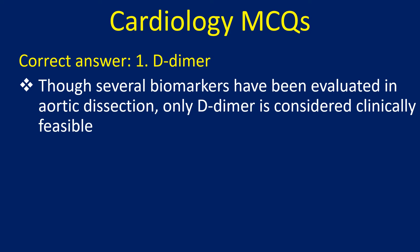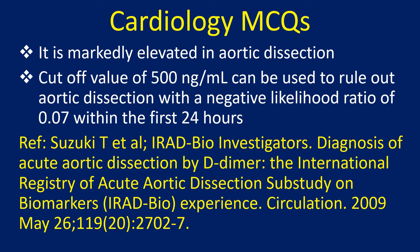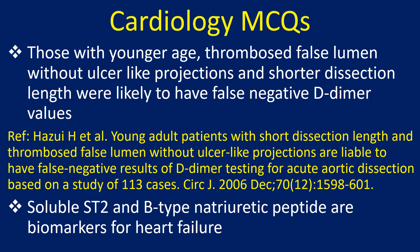Though several biomarkers have been evaluated in aortic dissection, only D-dimer is considered clinically feasible. It is markedly elevated in aortic dissection. A cut-off value of 500 ng/mL can be used to rule out aortic dissection with a negative likelihood ratio of 0.07 within the first 24 hours. Those with younger age, thrombosed false lumen without ulcer-like projections, and short dissection length were likely to have false negative D-dimer values.